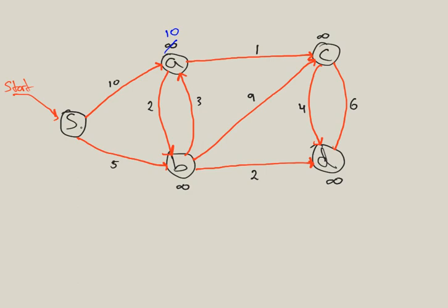Now similarly, you can also get from S to B, and 5 is certainly less than infinity. So we update its value to 5. Now it takes 10 units to get to A and 5 units to get to B from S.